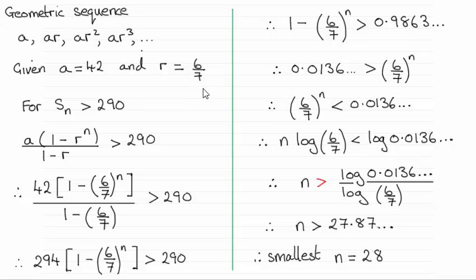So I'll leave it up to you to experiment. Anyway using this particular formula substituting 6 sevenths in for r and our first term a is 42 we get this equation or inequality I should say. And then all I've done is do 1 minus 6 sevenths which is 1 seventh and 42 divided by 1 seventh is 294.